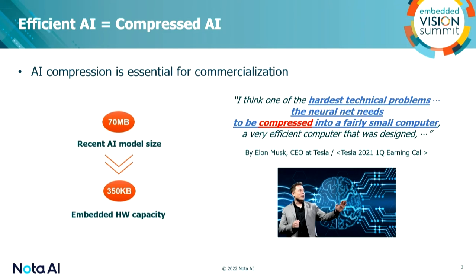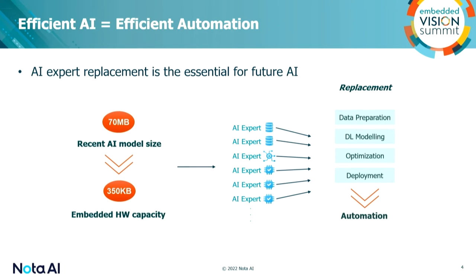Elon Musk mentioned AI compression in an earnings call back in 2021. In order to achieve AI model compression, we have to do our best effort at each phase of the AI model development process — that means from data preparation, modeling, optimization, compiling, to deployment. Each phase can contribute to AI model compression.